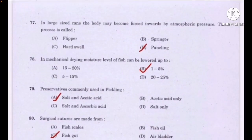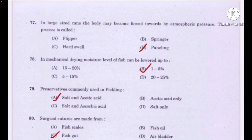In large-sized cans, the body may become forced inwards by atmospheric pressure; this process is called — correct answer option B: paneling. In mechanical drying, moisture level of fish can be lowered up to — correct answer option B: 1 to 5 percent. Preservation commonly used in pickling — correct answer: salt and acetic acid. Surgical sutures are made from — correct answer option C: fish gut.